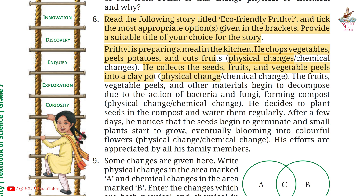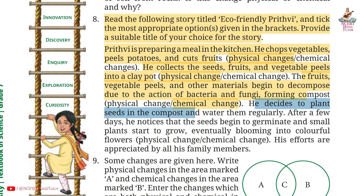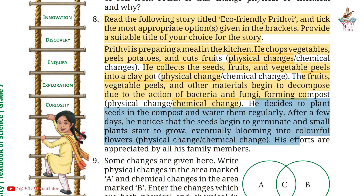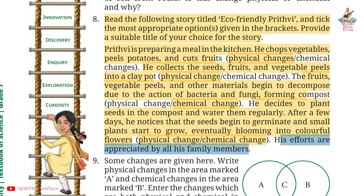The fruits, vegetable peels and other materials begin to decompose due to the action of bacteria and fungi, forming compost — this is a chemical change. He decides to plant seeds in the compost and water them regularly. After a few days, he notices that the seeds begin to germinate and small plants start to grow, eventually blooming into colorful flowers — this is both physical and chemical change.